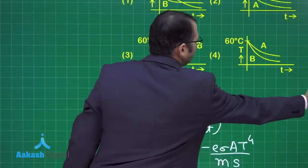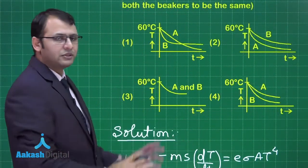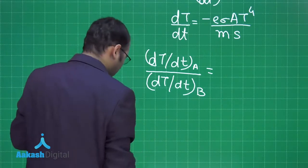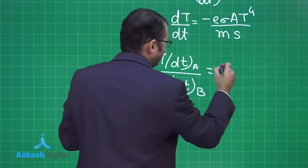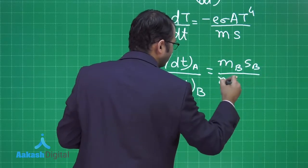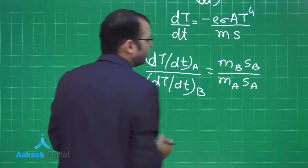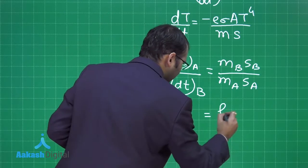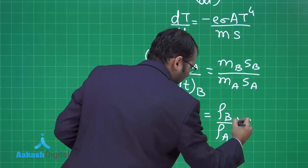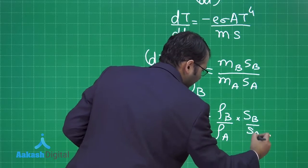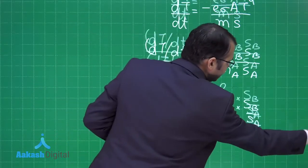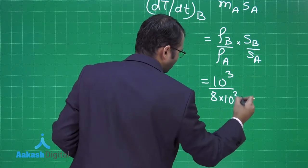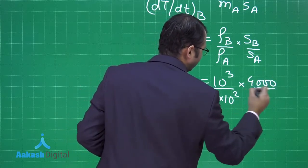First of all, this slope would be negative, which you can see in all the options. All of them are going downward, meaning slope is negative for all cases. If you see here, you'll find that the ratio will be mass of B times specific heat of B divided by mass of A times specific heat of A. Since the volume for both liquids are the same, this ratio will depend on the density ratio and the specific heat ratios.